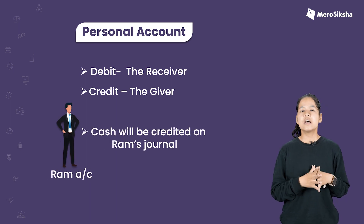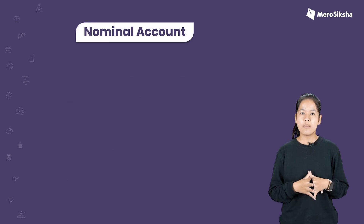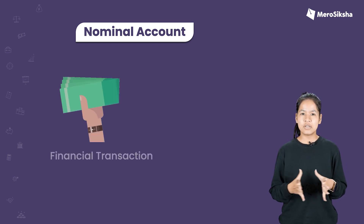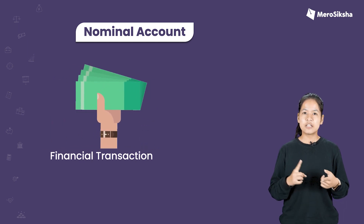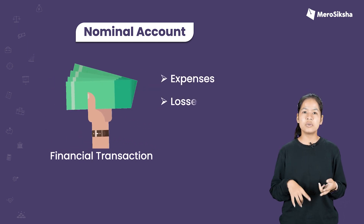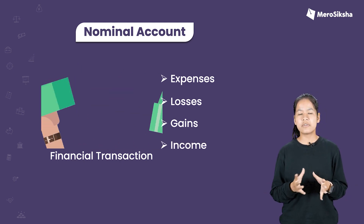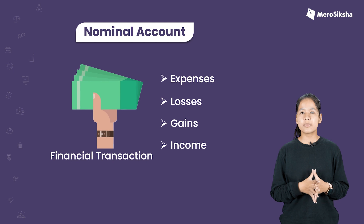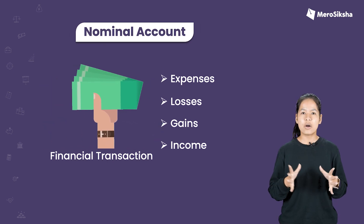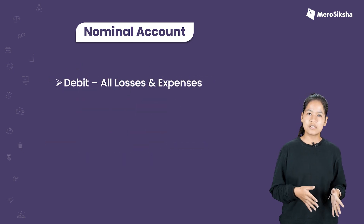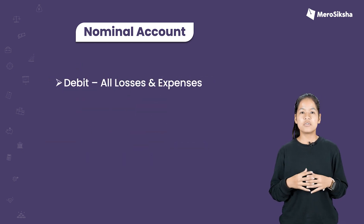So we have the final traditional approach account — nominal account. Nominal accounts relate to financial transactions such as expenses, losses, gains, and income. If we have different scenarios of credit and financial transactions, we have all the nominal accounts. The rule is: debit side — all the losses and expenses; credit side — all the gains and incomes.